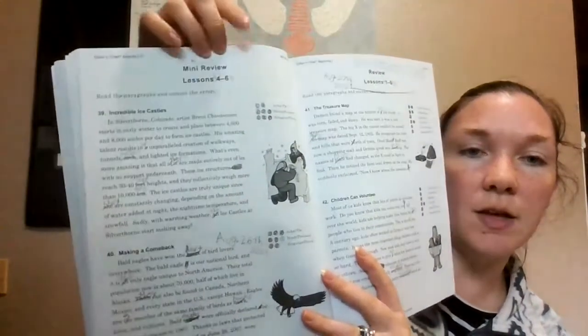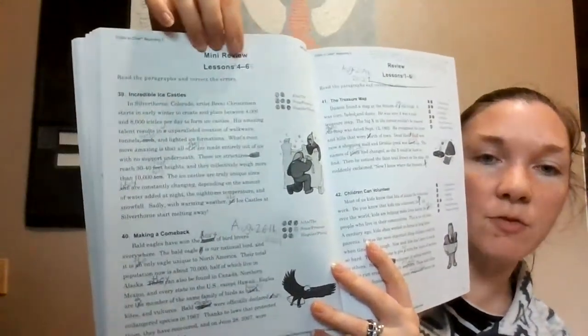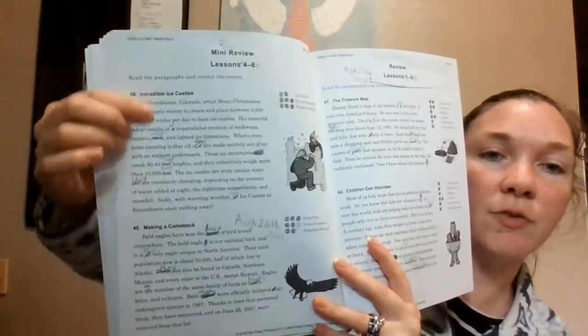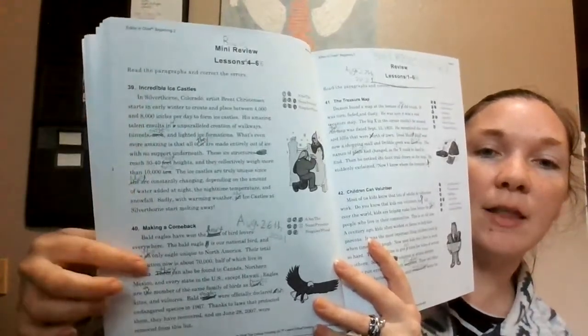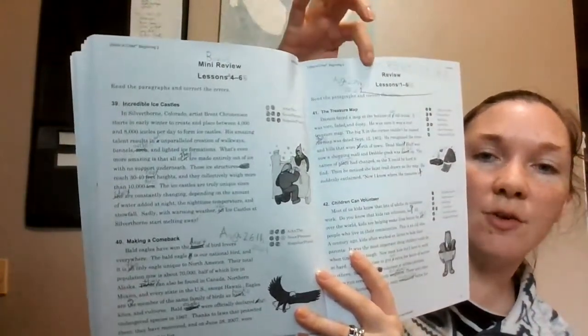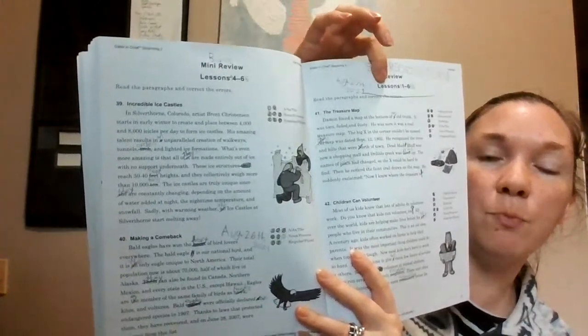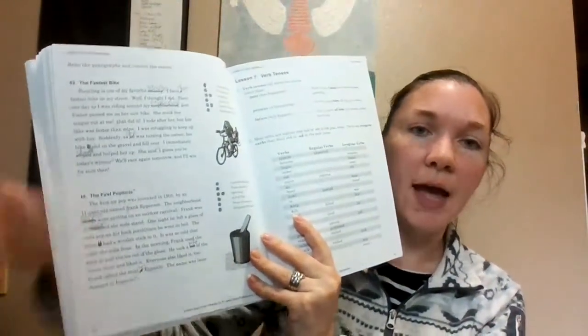Then there's another mini review. My kid likes to write all over these and change the names of the reviews. But then there's a mini review, again, over the last three lessons. And there were two paragraphs, then there's a review over the previous six lessons. And that one has four paragraphs of the review. And then it starts a new lesson.